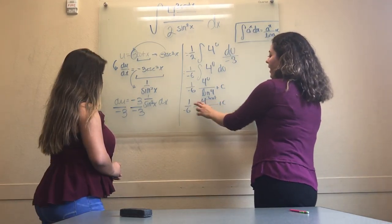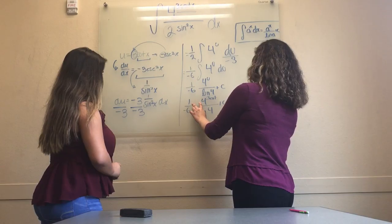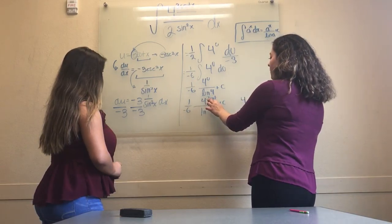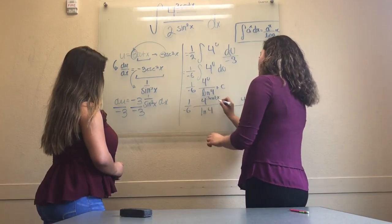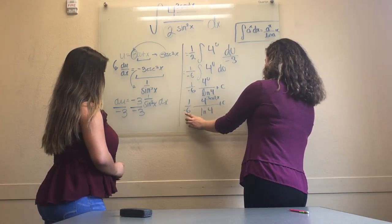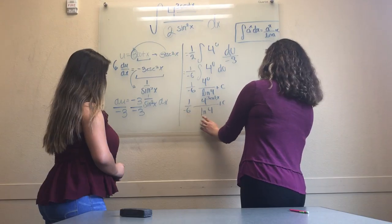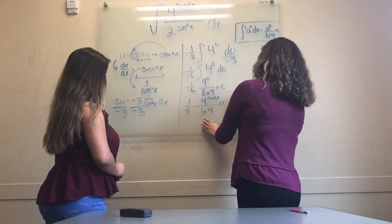To get the actual answer, we have to multiply 1 times 4 to its exponent, that is 3 cot x divided by negative 6 ln of 4 plus c. And this is the actual answer.